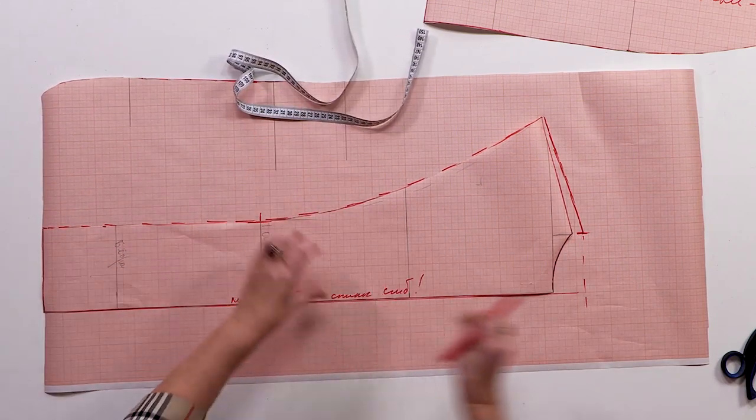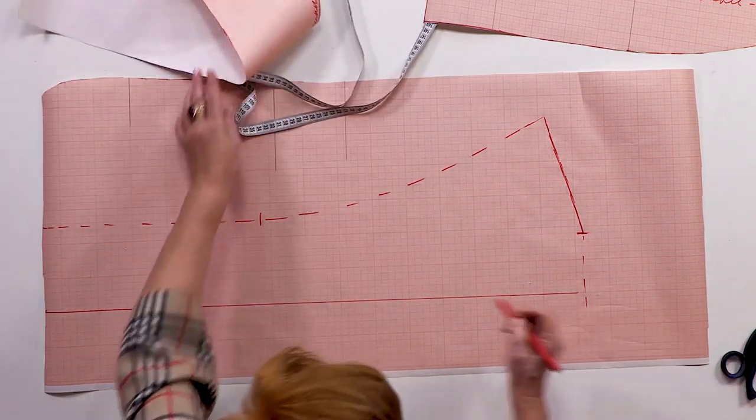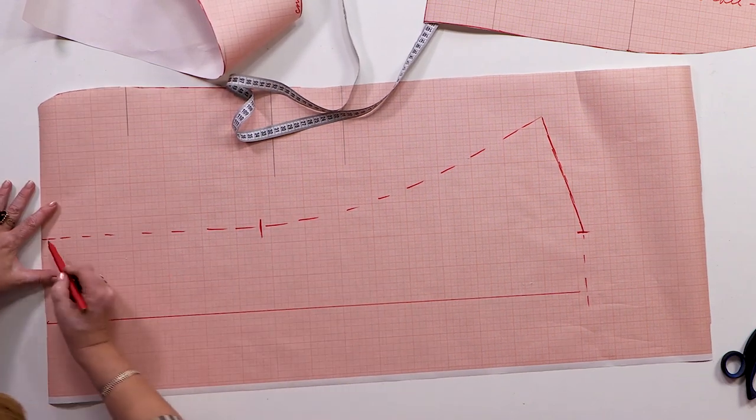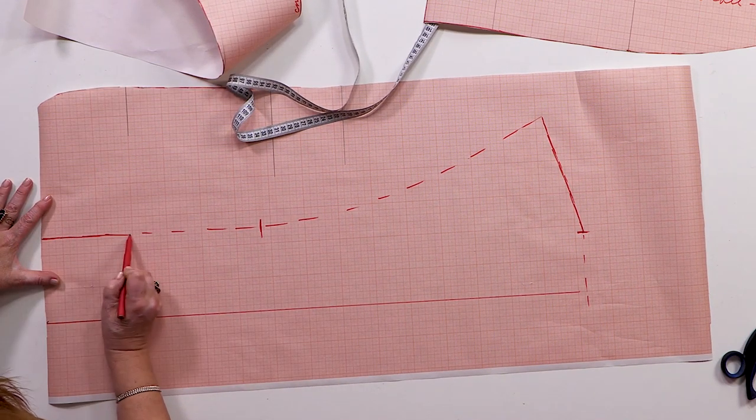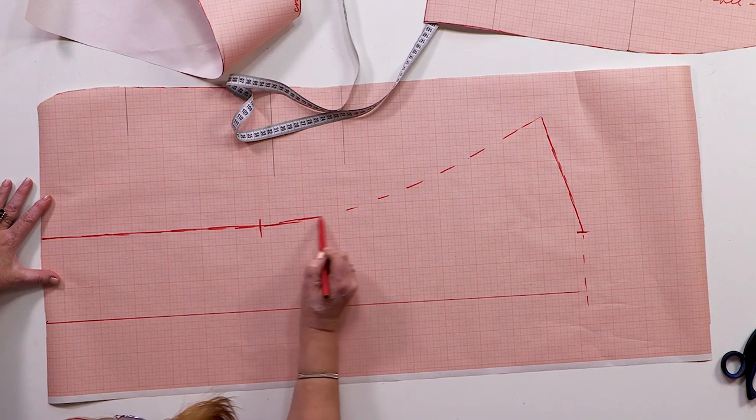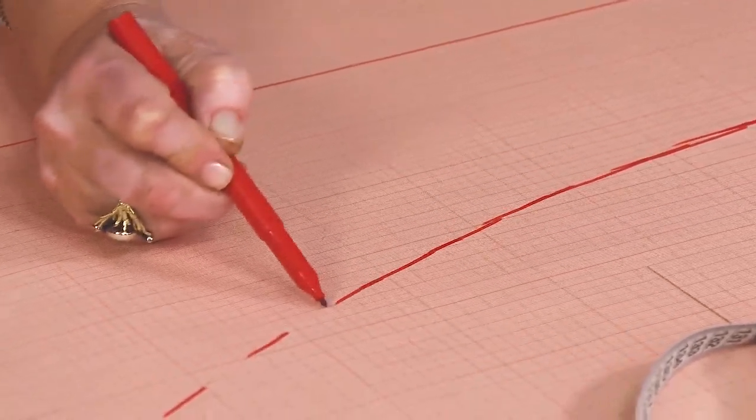I can move the back pattern aside now. This is the waistline. The only things left to be drawn are the collar and the underbust seam.